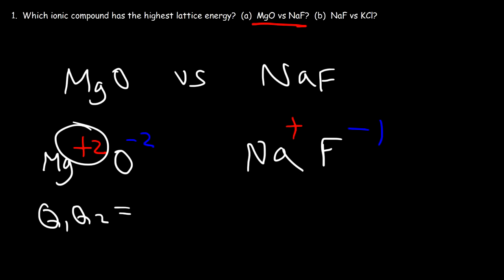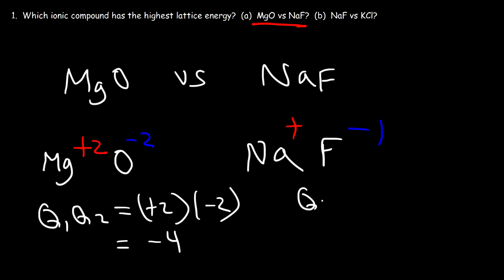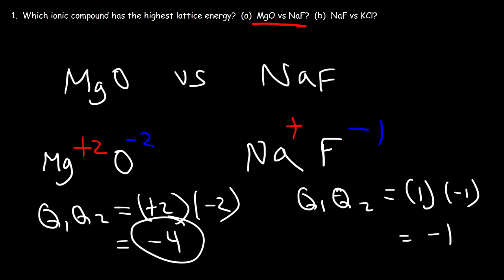For magnesium oxide, q1 is +2 and q2 is -2, giving a product of -4. For sodium fluoride, q1 times q2 is +1 times -1, which is -1. Notice that the product of the charges in magnesium oxide is four times as large as in sodium fluoride, so we should expect that magnesium oxide has a much higher lattice energy than sodium fluoride.